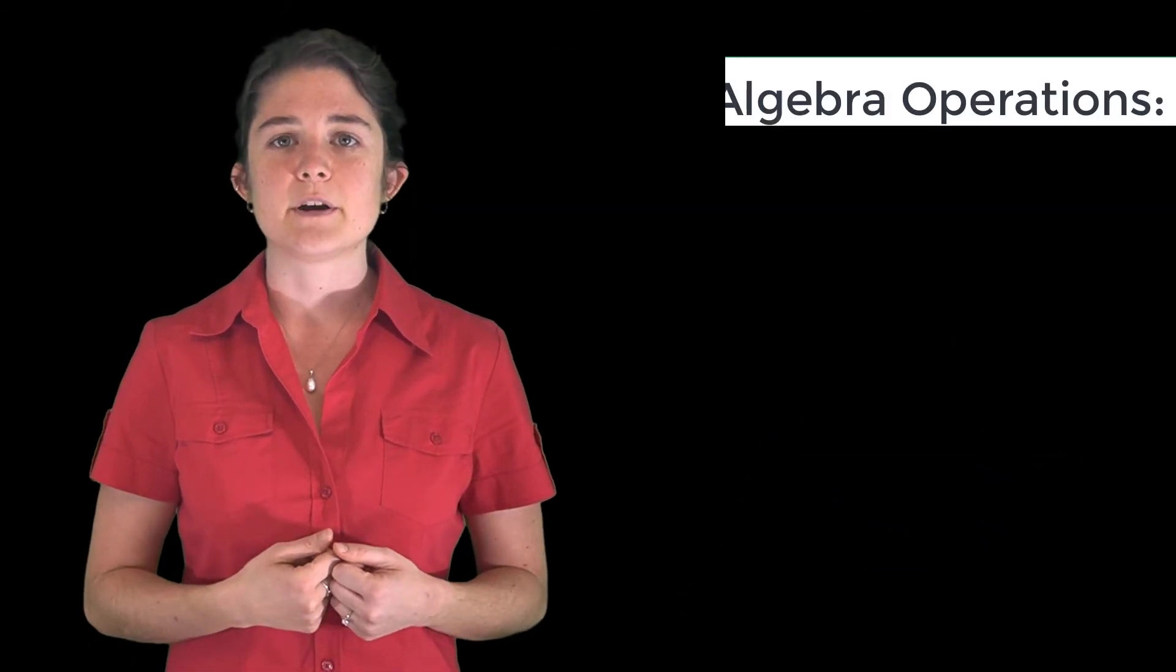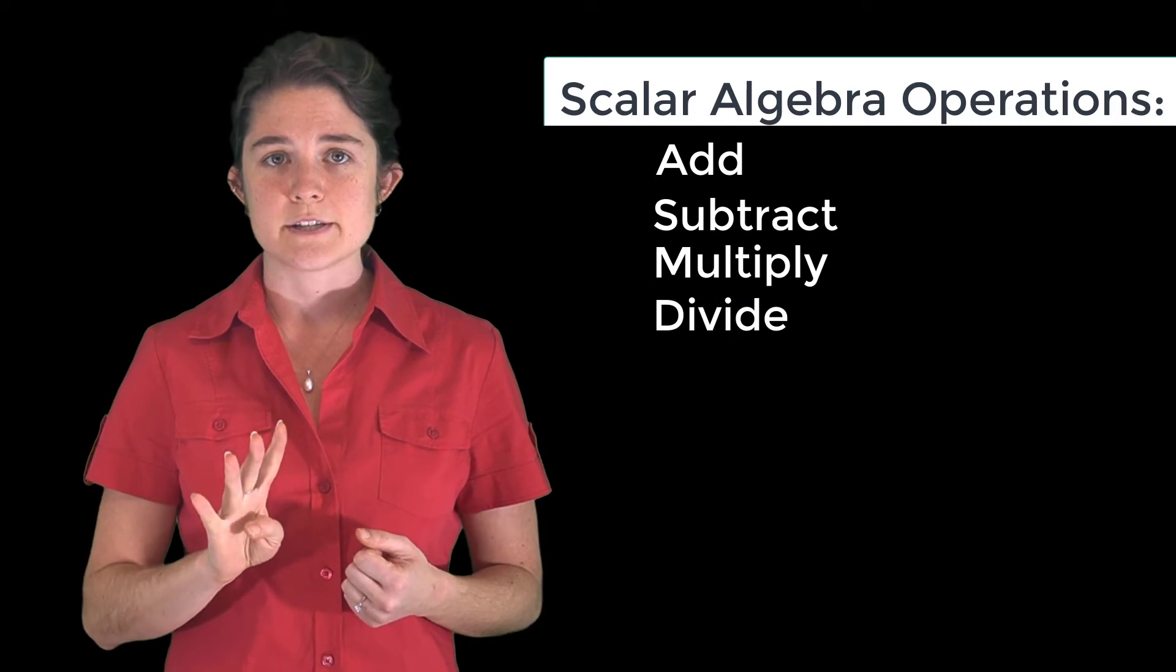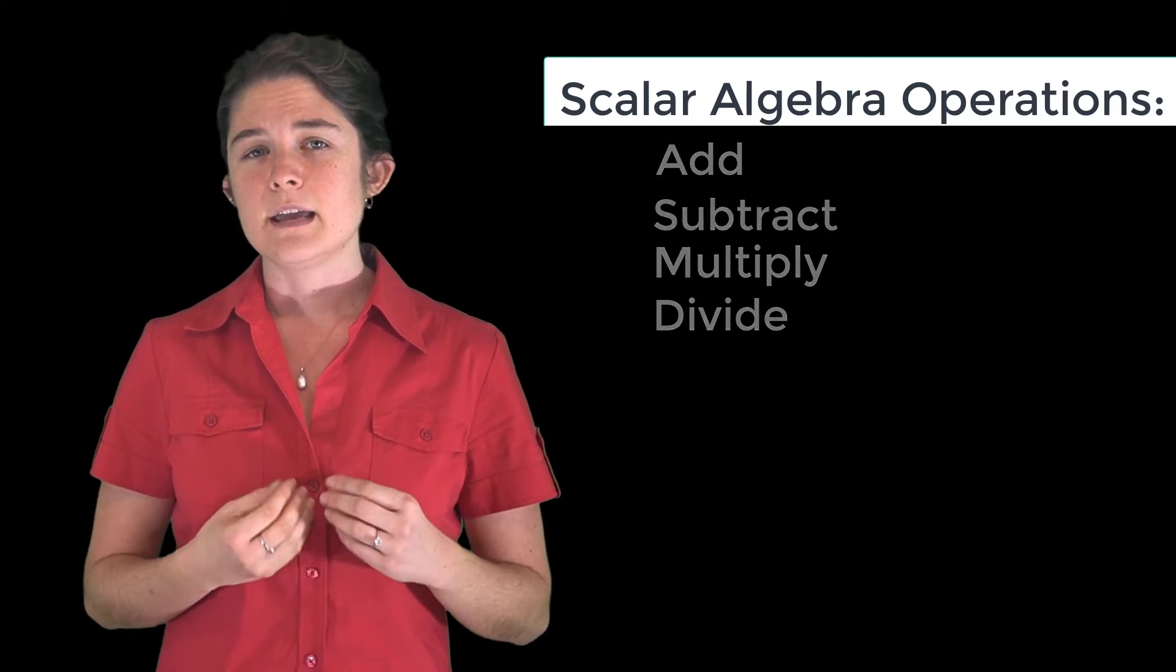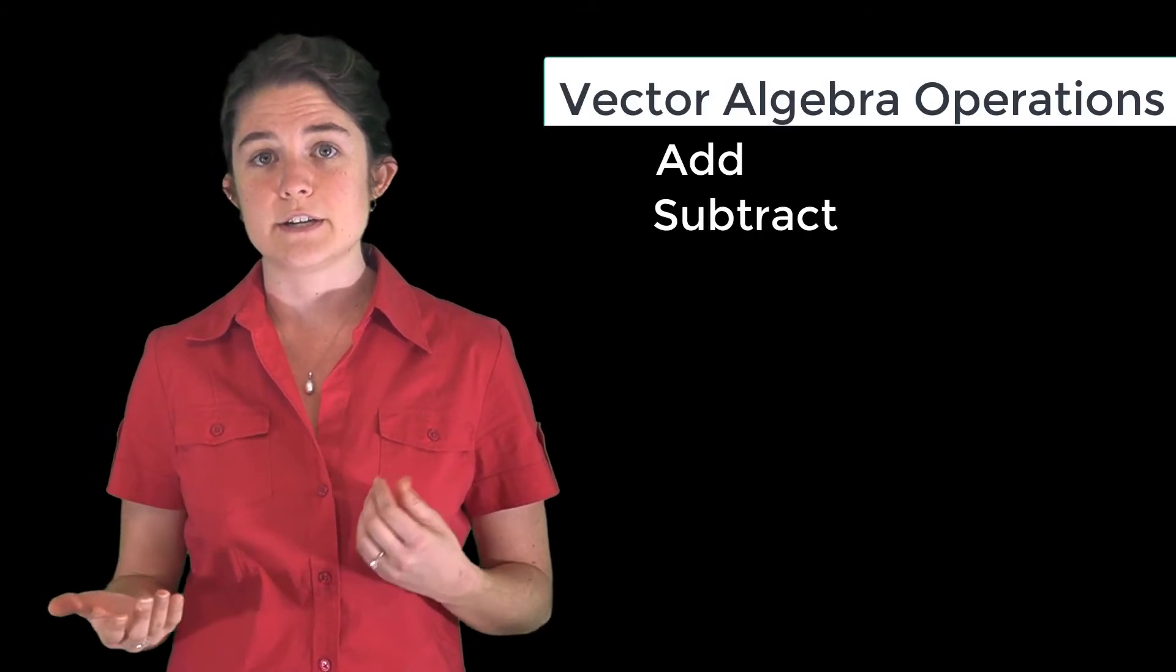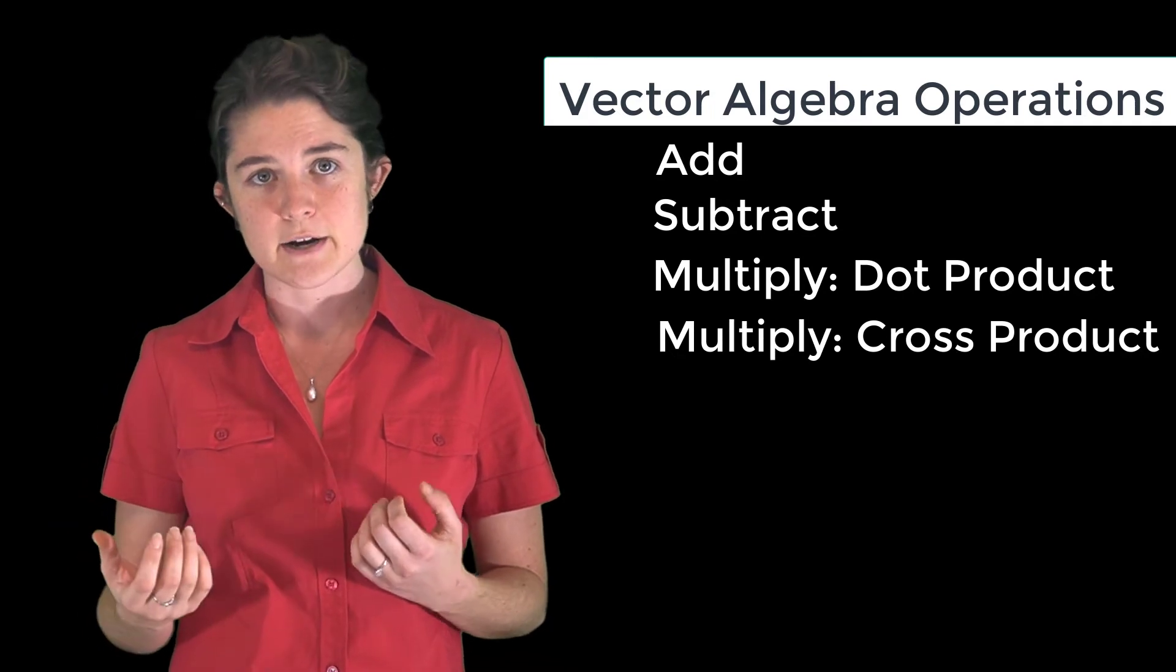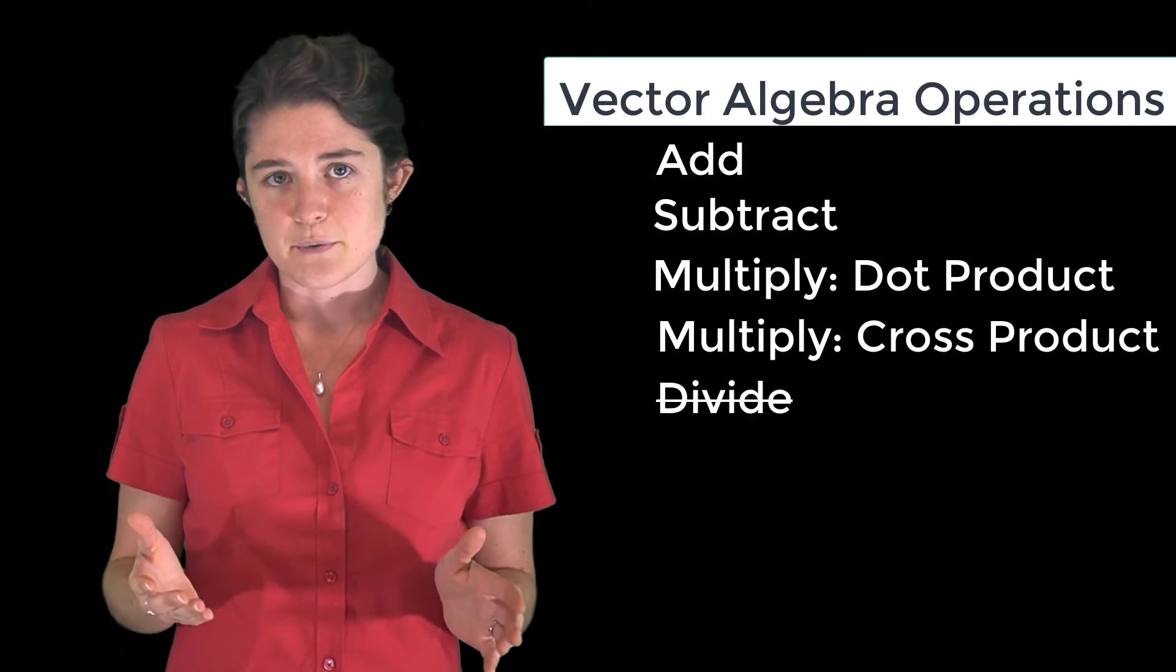In scalar algebra, there are four basic operations: add, subtract, multiply, and divide. In vector algebra, we have pretty exact corollaries for addition and subtraction, but we have two different ways to multiply—the dot product and the cross product—and there's no way to divide.